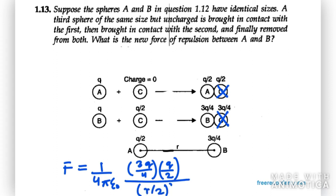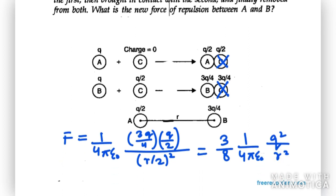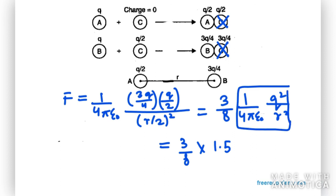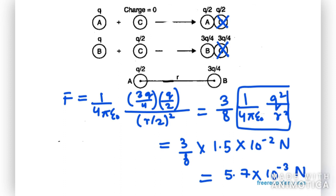Solving this gives (3/8) × (1/4πε₀) × Q²/R². Substituting the known values — where F in the previous case was 1.5 × 10⁻² N — you get a final answer of 5.7 × 10⁻³ N. So that is your answer for question number 13.